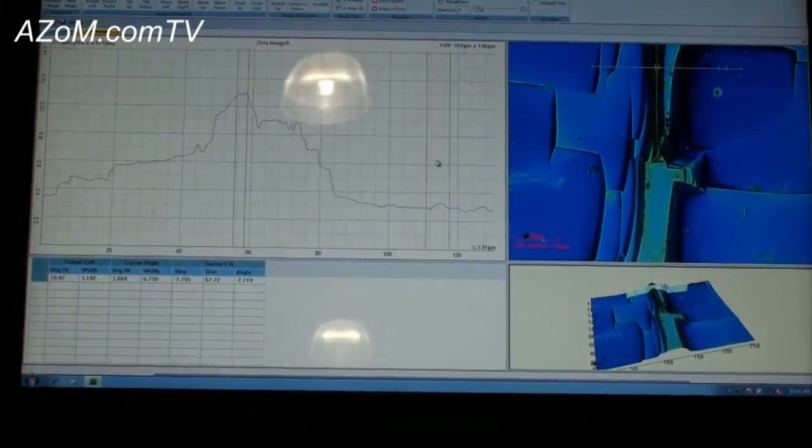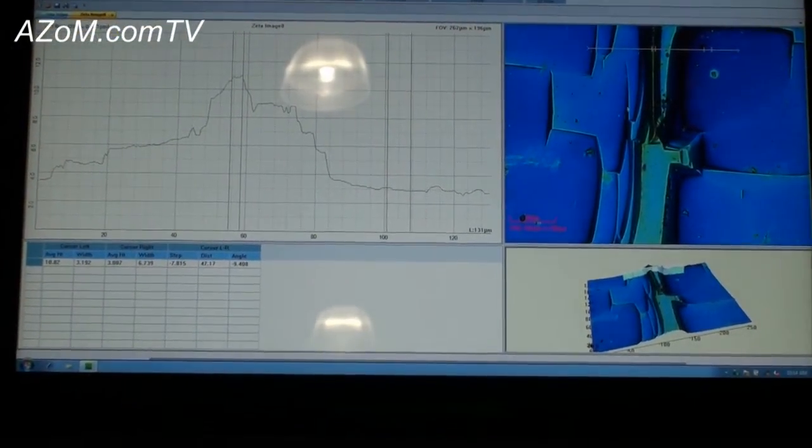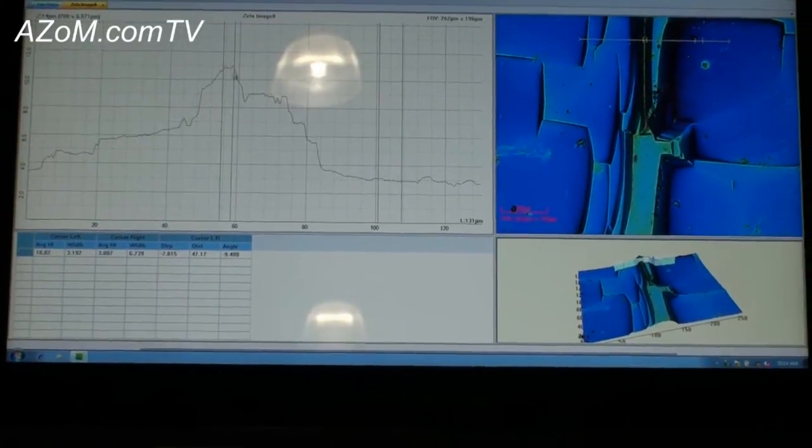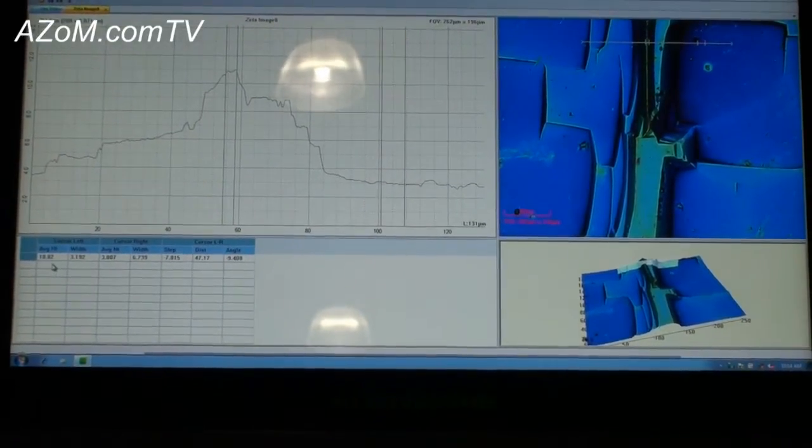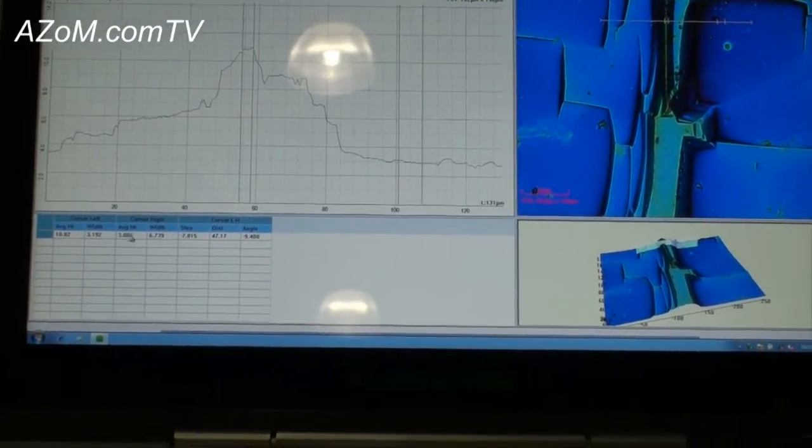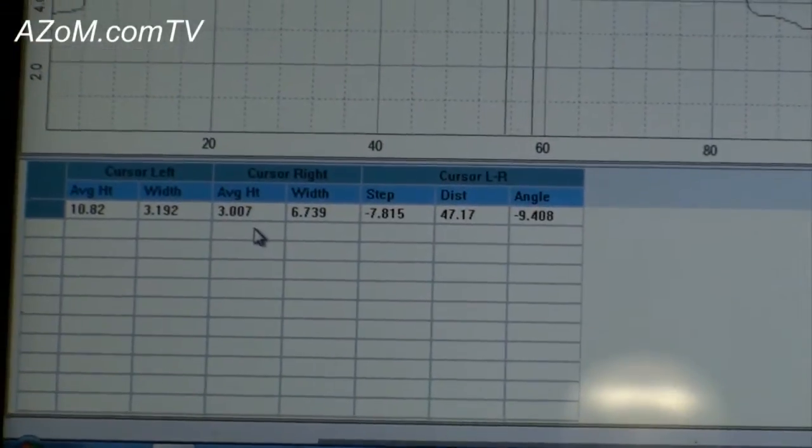You can actually see on the 2D composite where I'm actually located on the actual image. So this cursor pair average height from scan is 10 microns. The average height of the second cursor pair is at 3.